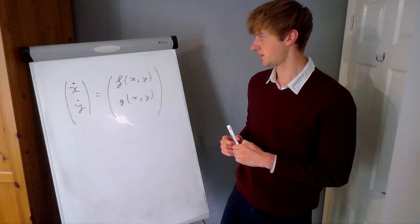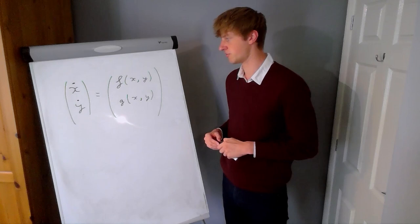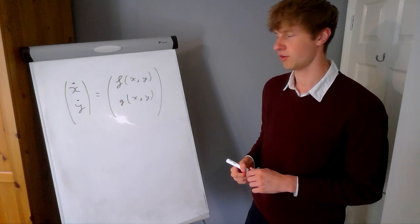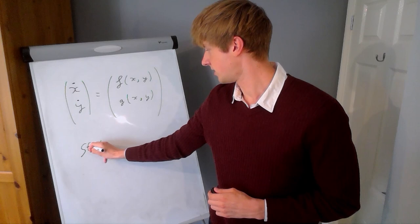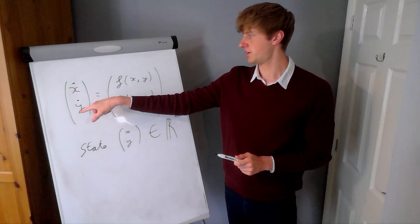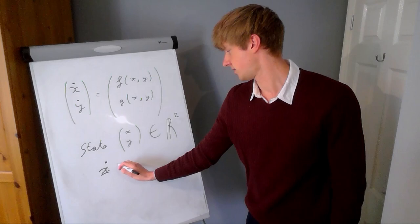Let's make sure everything is rigorously defined. In two dimensions a dynamical system has to be given by a rate of change of the state, given by a function of the state. We're using two variables x and y, and the rate of change of both x and y is each given by a different function of the state x and y. I could alternatively write this in vector notation: x-dot (the rate of change) equals some vector function of the state.